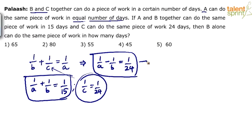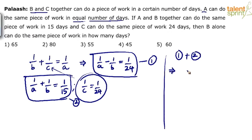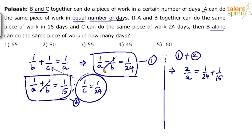Now we work on these two equations. If we add them, we get 2/A and the 1/B terms cancel, giving us A first — but then we'd need to substitute back to find B. A smarter approach is to subtract the two equations, which directly eliminates A and gives us the value of B. Since the question asks for B alone, subtracting is more efficient and saves time.